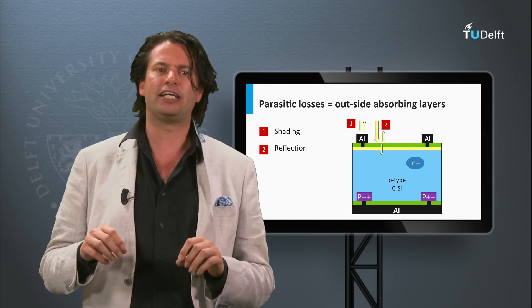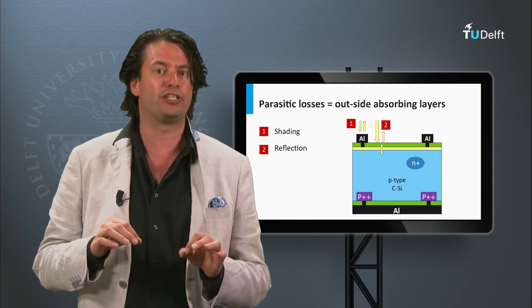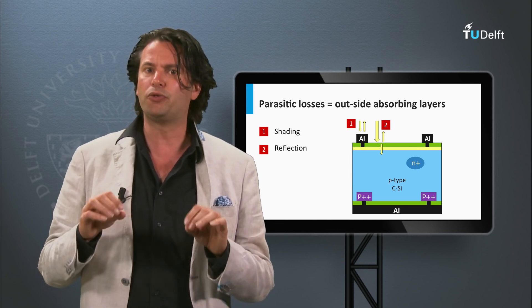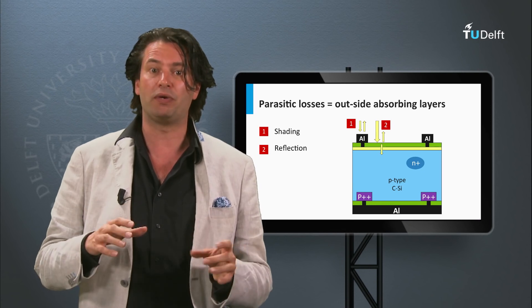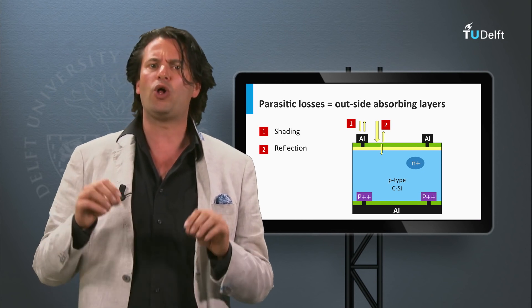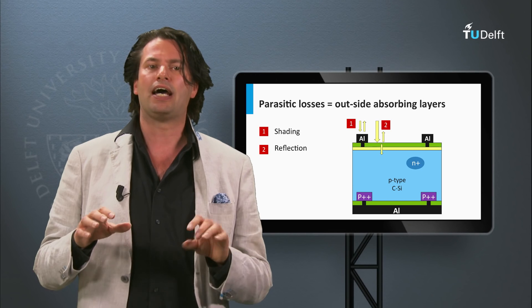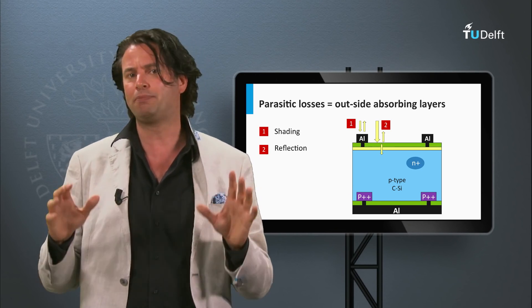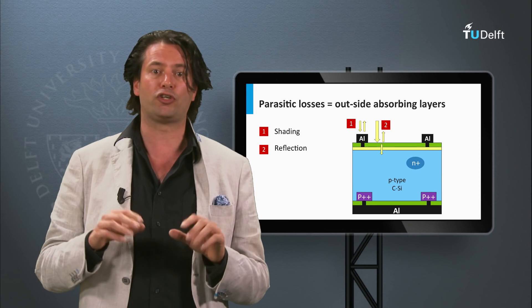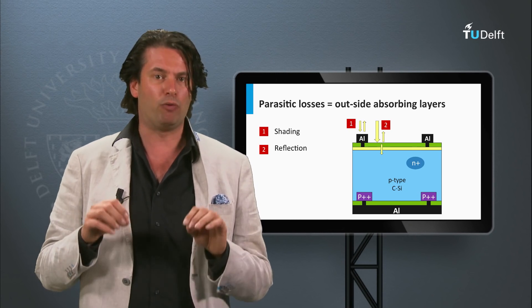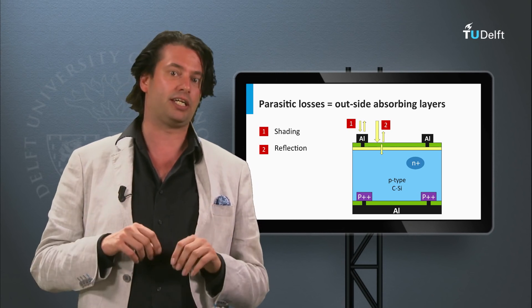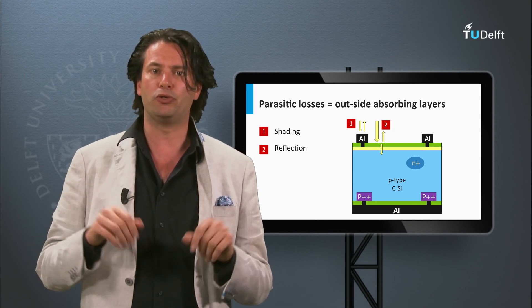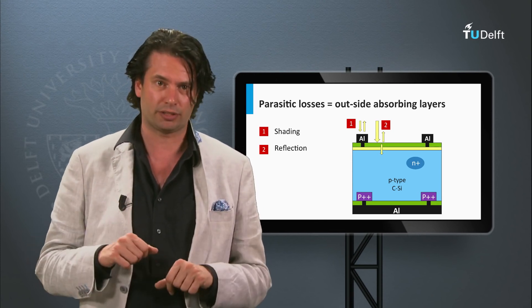The second optical loss mechanism is the reflection at the front interface of the solar cell. Light passing through an interface between two media with different refractive indices will always be partly reflected and partly transmitted at the interface. As all types of solar cells suffer from this loss mechanism, I would like to spend some time on this in the next block, discussing some concepts which are being used as anti-reflection coatings.